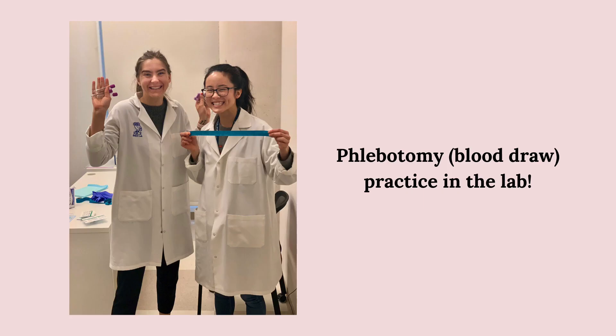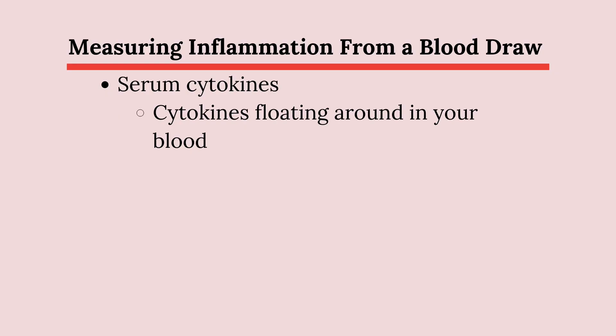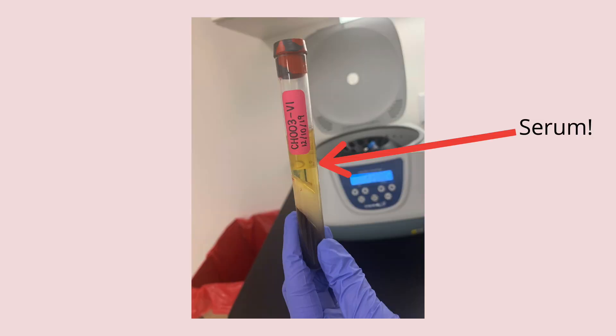Let's move to measuring cytokines in the blood and what that means. There are two different methods that we use in our lab to assess overall bodily inflammation, and both come from a blood draw, but we use different parts of the blood for these two measures. To assess overall systemic cytokines floating around in your blood, we measure the cytokines in the serum part of your blood. We use a centrifuge to separate the blood cells from the serum, which ends up looking about like this.